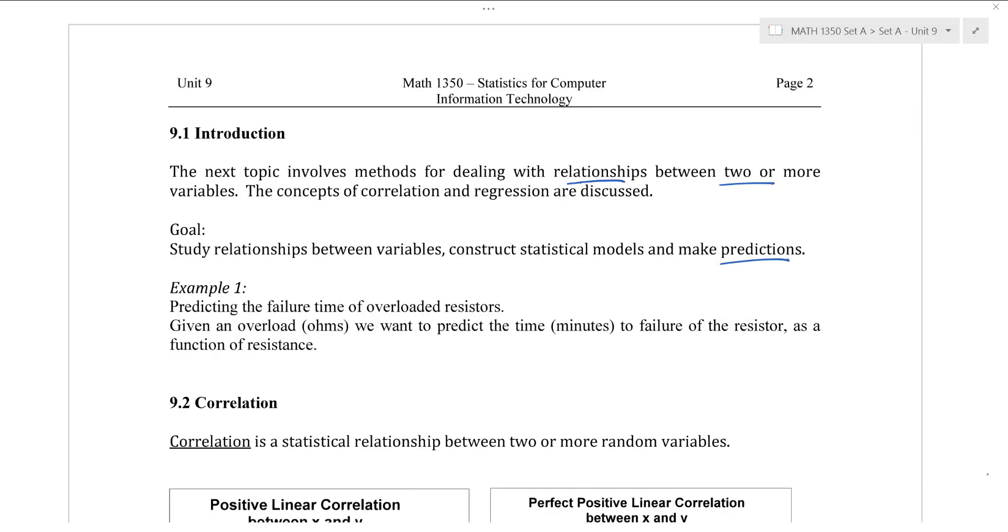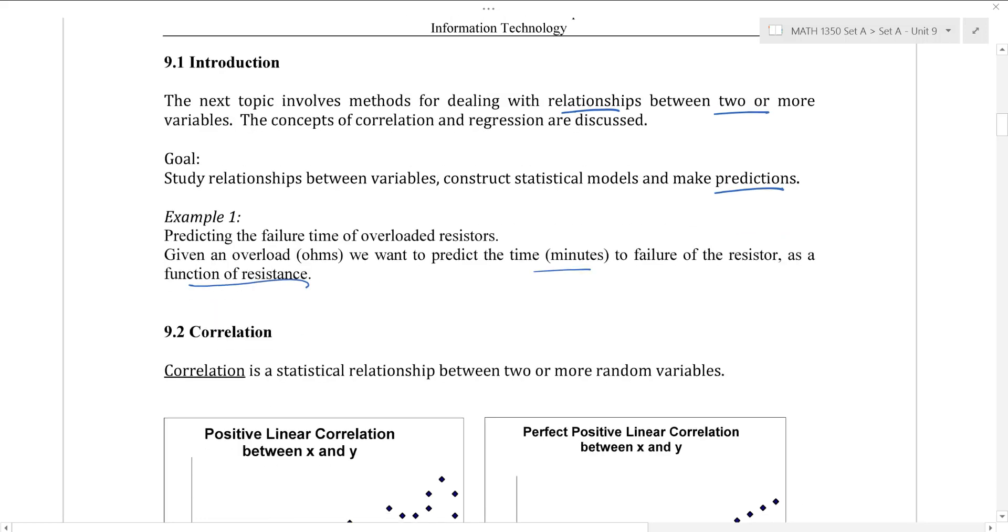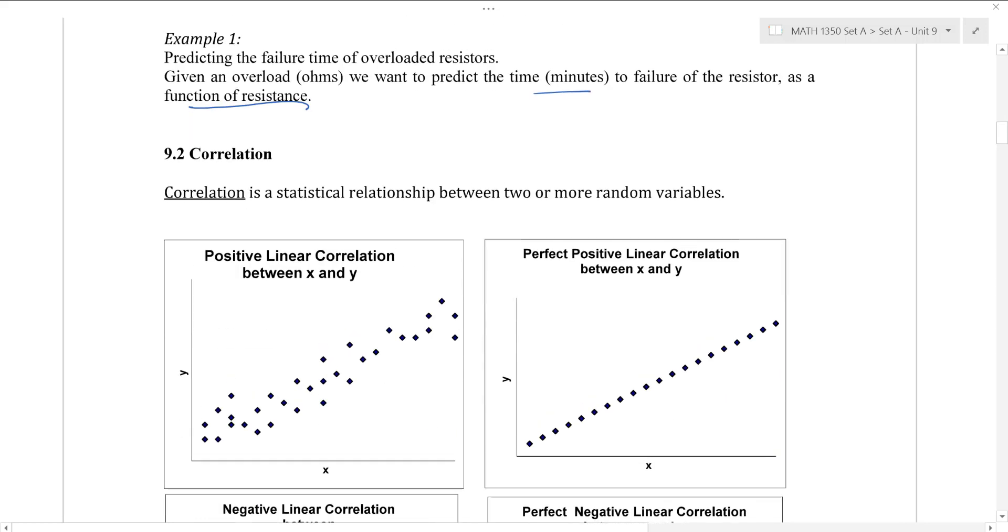So let's think about this first example here. You may be interested in predicting failure times of overloaded resistors. Perhaps maybe you're given some ohms and you want to predict the time in minutes that the resistor will fail. We will consider that time as a function of the resistance. You can imagine a couple of different things happening. If ohms and minutes happen to be correlated, perhaps when we draw an xy scatter plot we'll be able to see some kind of relationship.